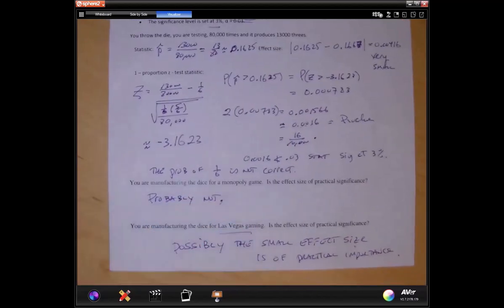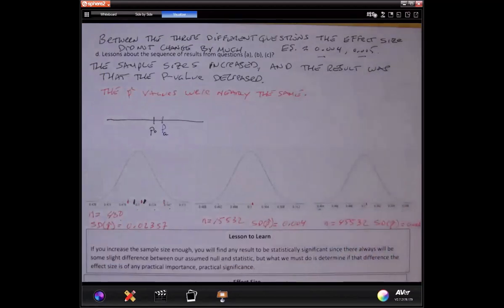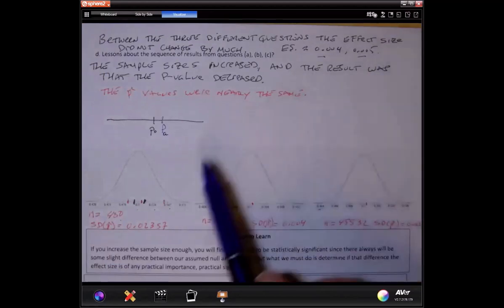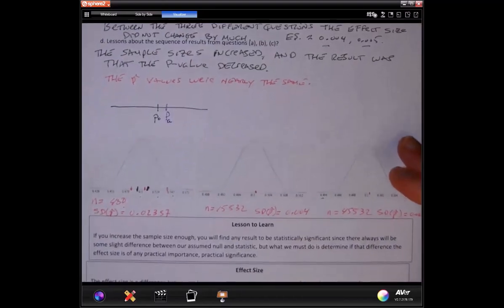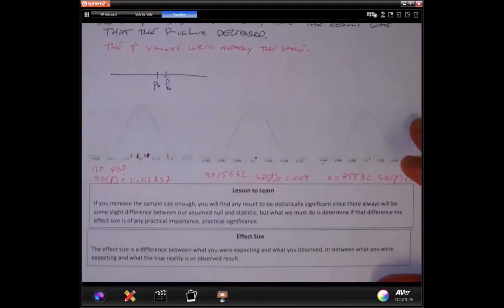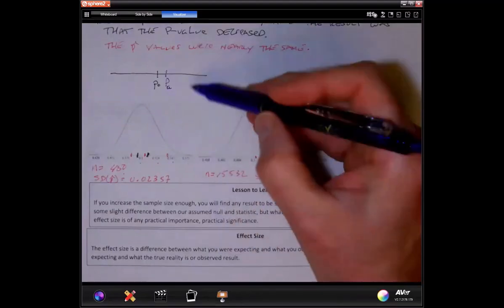That's what you have to consider. Practical importance is dependent on the situation and what you're about to use this for. So now that we've learned this lesson about sample size, and that really, as we increase the sample size, if there is a difference, we might be able to detect it, depending how small it is. And that difference is the effect size. The effect size is the difference between what you're expecting and what you observe, or between what you were expecting and what true reality is.